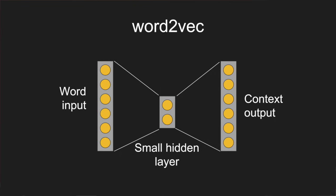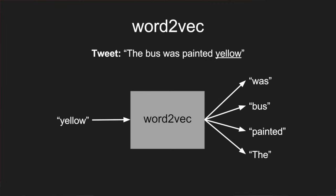Here's a simple picture of what a Word2Vec neural network looks like. You essentially feed in a word, and it produces in the middle a small vector, which is the word embedding. Then it produces as output something like a context. To describe this in a little more detail, I'll give an example. I've picked out a random tweet from my corpus and a random word from within that tweet—in this case, yellow—and I'm going to feed that word as input to the Word2Vec neural network.